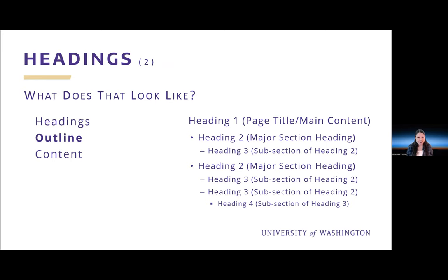The heading one provides the page title and describes the main content on the page. Heading two is a subsection of heading one, heading three is a subsection of heading two, and so on through heading level six. Sometimes there is more than one subsection of the same heading level — just repeat the heading level again. In HTML there are six heading levels, so I advise not going beyond that because you may get undesirable behavior. If you need to go beyond level six, consider breaking up content over more than one page.